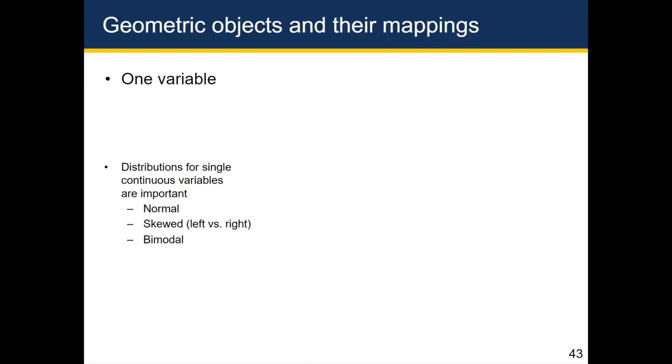The type of geometric object you use depends on the type of data you have. If you're dealing with a single continuous variable, then you typically want to use the geometric object as a way to highlight the distribution. If the data has one peak, and that peak is in the middle, and there's an equal number of observations on either side, and it looks like the shape of a bell, we refer to that as a normal distribution, which in layman's terms is often called a bell curve.